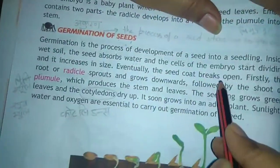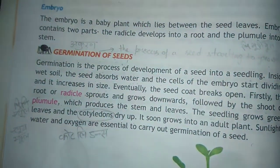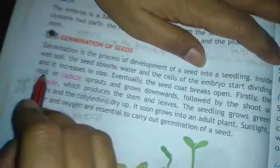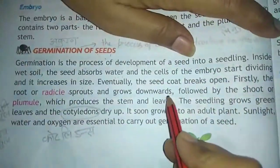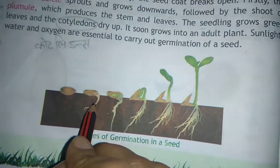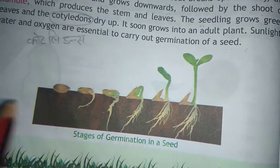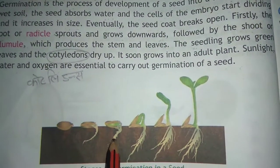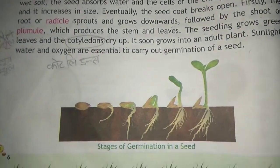The seed coat breaks open — aur us mein kya hota hai, seeds ka jo coat hota hai woh khul jata hai. Firstly, the root radical comes out and grows downwards. Dekhiye, is tarah se radical nikalta hai, jad nikal rahi hai, ye nikalna shuru hoti hai niche, downward, niche ki taraf se.